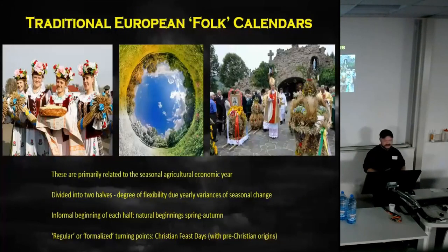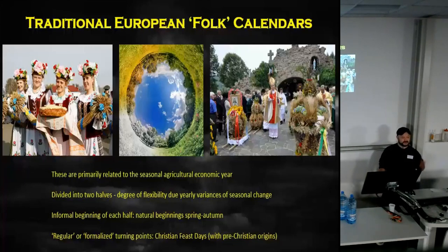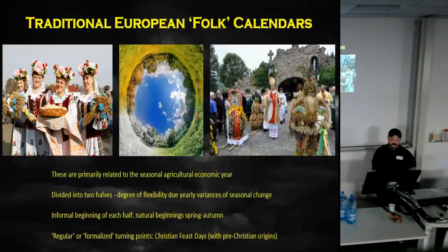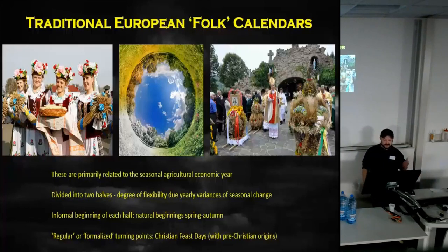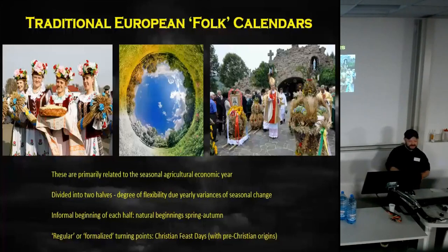In traditional European folk calendars, the year is primarily divided into two halves with some flexibility due to variances in seasonal change — the calendar rolls with the natural beginnings of spring and autumn. But regular or formalized turning points are imposed; these often use Christian feast days, many with pre-Christian origins. So while your actual economic year may be somewhat flexible, you still try to mark it somewhat formally to keep things regular.